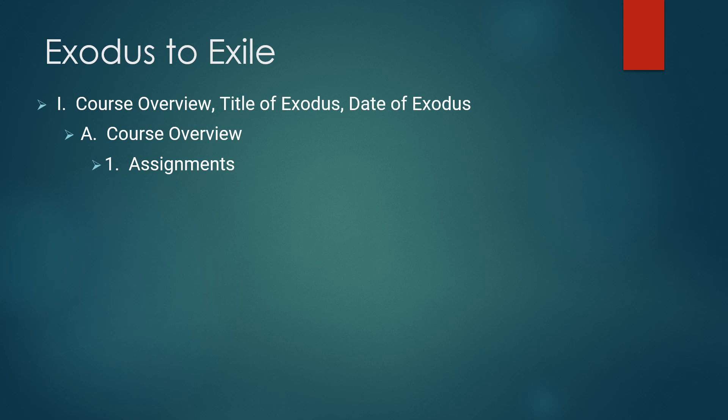Are these narratives to be understood primarily as providing illustrations from the lives of Old Testament rogues and saints of either ungodly or godly behavior that God's people today should be like? That's called an illustrative use — a character study of Old Testament history. Or are these narratives more properly understood as intended to describe how God was at work in the Old Testament period to bring to pass his great plan of redemption?